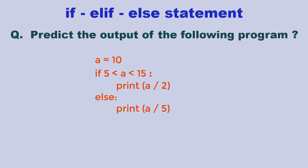Another kind of problem asked is to predict the output. What is the output of these lines of code? Here, since a is between 5 and 15, the if part will get executed, so it will print a divided by 2. So are you going to write the answer as 5? Since slash performs a floating point division, it will give the answer in float and the answer will be 5.0.